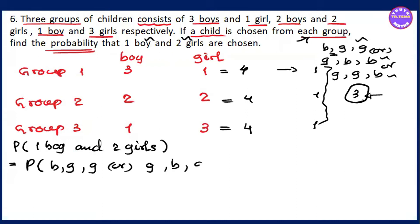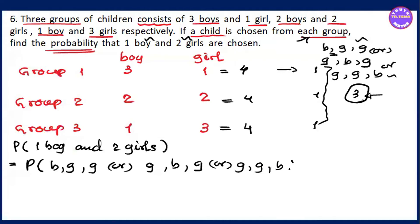Or G, B, B. And G, B, G. Or G, G, B. So the possible combinations for one boy and two girls are: first point, second girl, third girl.